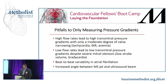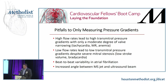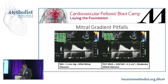Low flow states can lead to a low transmitral pressure gradient despite having severe mitral stenosis — such as a low stroke volume state or bradycardia. You can also have beat-to-beat variability like in atrial fibrillation, where on one beat you may appear to have mild mitral stenosis, and on the next you may appear to have severe mitral stenosis, just depending on which beat you measure a mean gradient on. You can also have alterations if there is an increased angle between the mitral stenosis jet and the ultrasound beam.